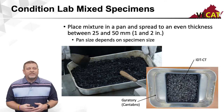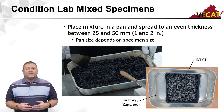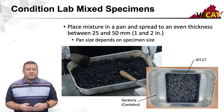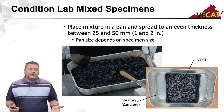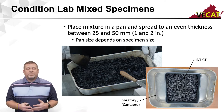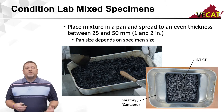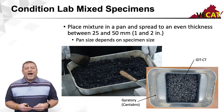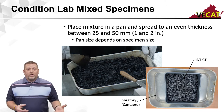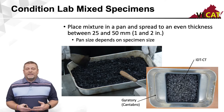Once your specimens are mixed, we want to condition them. AASHTO R30 explains how this is done. You want to condition them in a pan, and there's a specific layer thickness required — between 25 and 50 millimeters, which is one to two inches. A typical volumetric pill is around 5,000 grams, but an IDT-CT specimen is only about half that weight — approximately 2,500 grams — so I need a smaller pan size for my IDT-CT specimens to maintain the one to two inch thickness requirement.